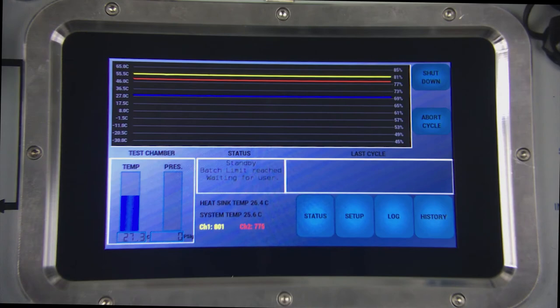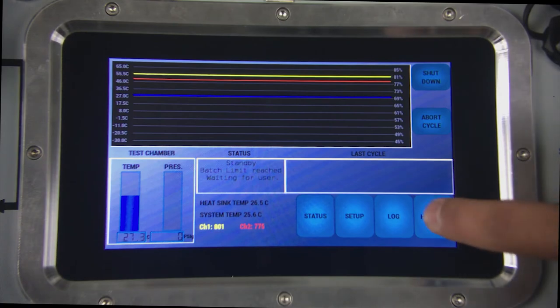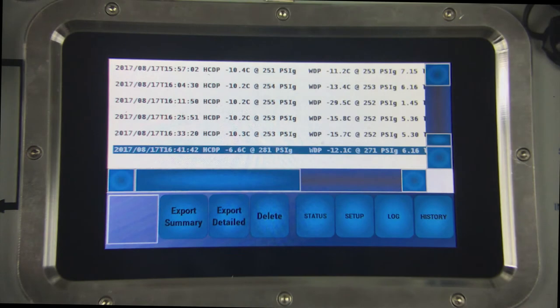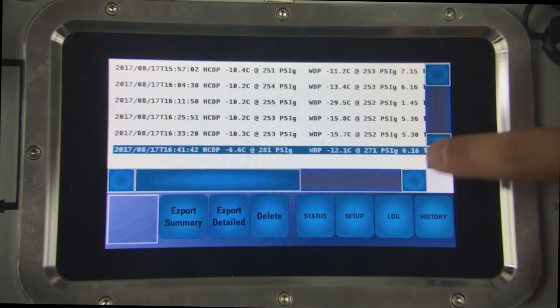Navigate to the history page by pressing the history button in the bottom right of the status screen. The history page contains all the detailed files for each test cycle completed by the unit. The results are sorted and displayed according to timestamp and show the hydrocarbon dew point, water dew point, moisture content, and user location info.